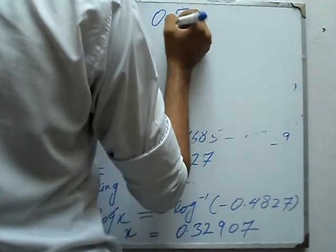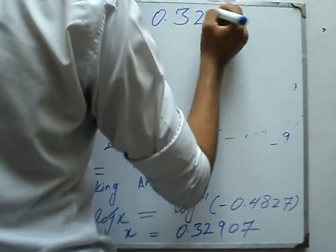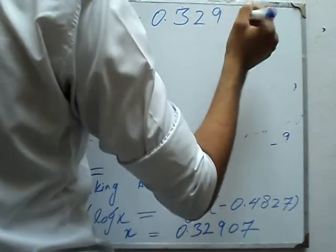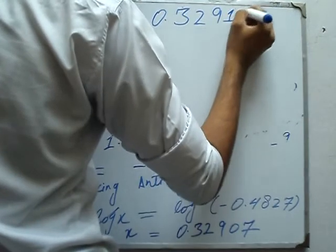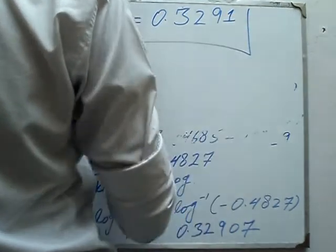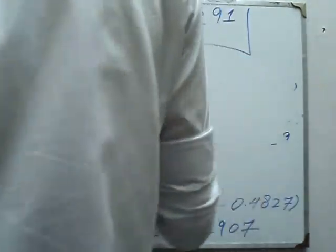x equals 8.3291. This is our answer for Part 1. Now let's go to the next part.